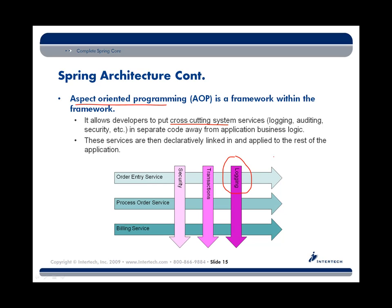Using aspect-oriented programming, what we'll do is develop these cross-cutting concern services like logging, auditing, and security — the system-level concerns that any application must have but that are not related to business itself. In other words, it's not about taking orders or processing orders or taking care of billing.